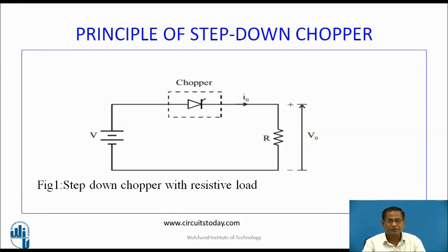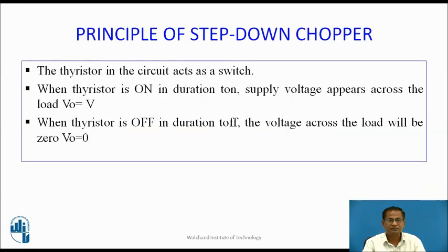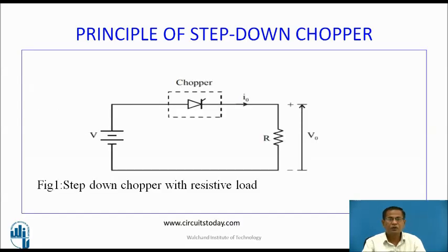Principle of step-down chopper. The figure shows the circuit diagram of a step-down chopper with a purely resistive load. The dotted rectangle represents the chopper switch, which consists of a power device with internal firing circuit, internal protection circuits, and commutation circuits. The thyristor in the circuit acts as a switch. During on time, when the gate pulse is applied to the chopper switch, it conducts and acts as a short.